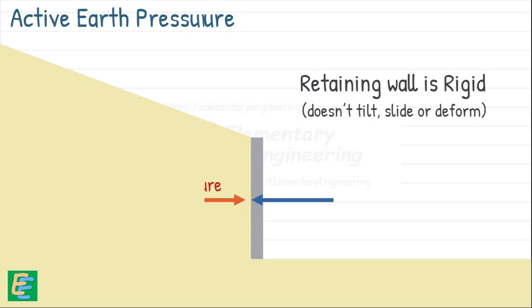Then, there is active earth pressure. Unlike at rest condition where the wall is rigid, here the wall actually moves just a little. This movement can happen for many reasons.